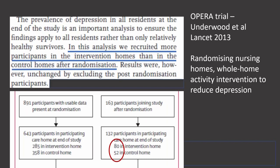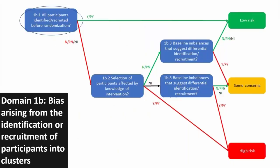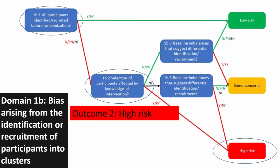For the second outcome, it was measured on individuals recruited both before and after randomisation. For the first outcome, all participants were identified and recruited before randomisation — clearly low risk. However, for the second outcome, looking at the 163 participants joining after randomisation, 132 were included in the analysis: 80 in the intervention homes and only 52 in the control homes, even though overall more participants were in the control arm. This suggests that knowledge of which home individuals were going into did affect their recruitment after randomisation. The tool would label this outcome high risk — with a caveat that only a small proportion were recruited post-randomisation.